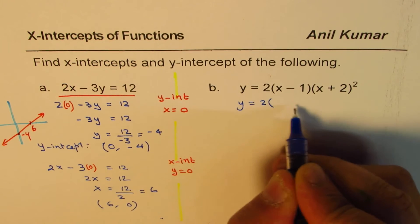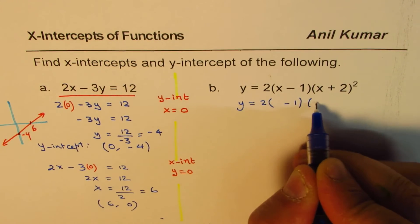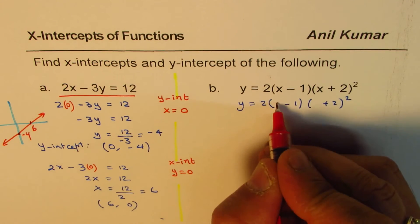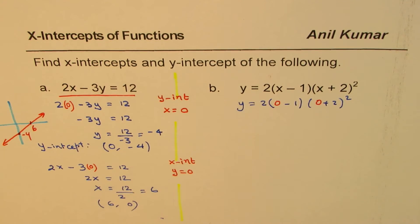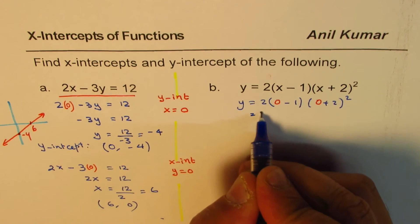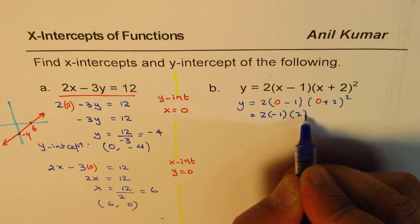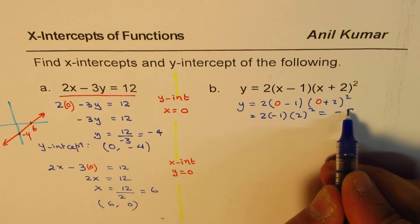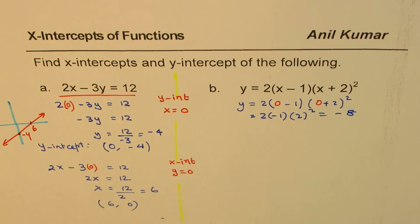So let's substitute 0 for x. We get y equals 2 times, so I'll substitute 0 for this x, so (0 - 1)(0 + 2)². We get 2 times minus 1 times 2 squared which is 4, times 2 is 8 with a negative sign, so we get minus 8.